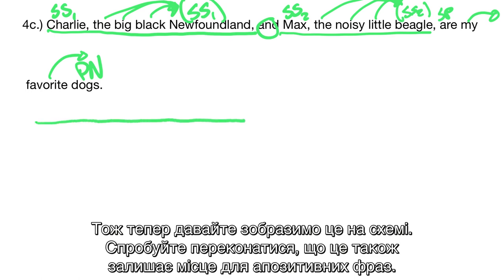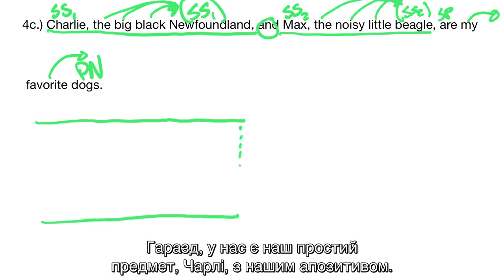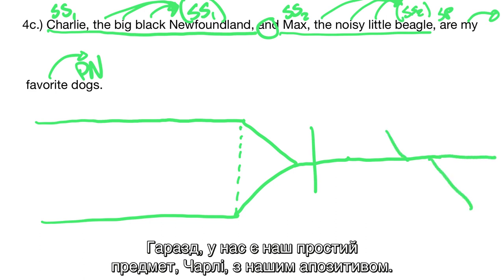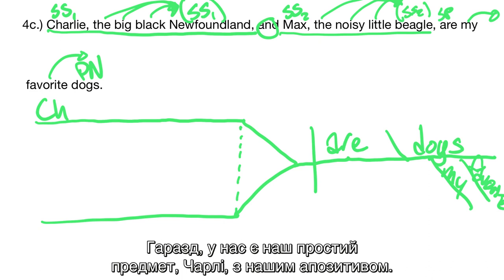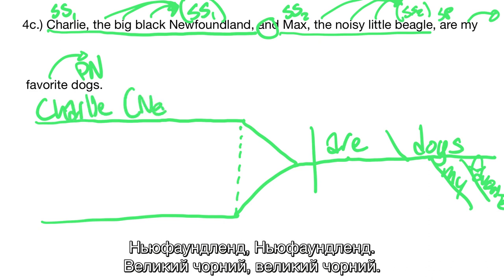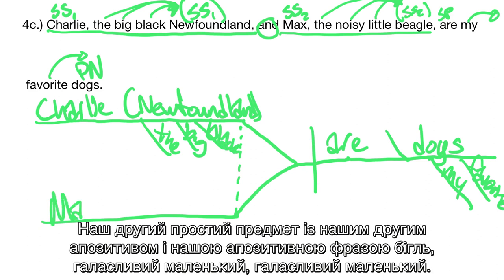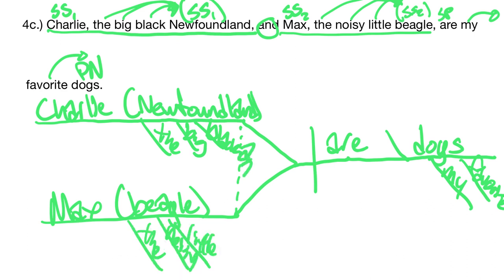Try to make sure to leave space for the appositive phrases as well. So we have simple subject one, Charlie, with our appositive Newfoundland — the big black — then our second simple subject Max with our second appositive phrase: beagle, the noisy little. And then 'and' connects the two. Go ahead and share your notes on this video. See you.